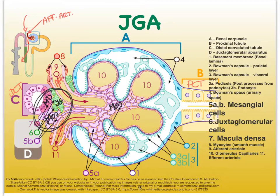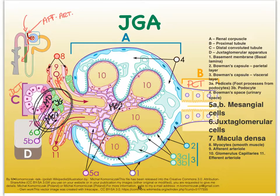Once you learn the details about how blood pressure in the body is regulated with the help of our kidneys, you'll see how important the juxtaglomerular apparatus is in regulating systemic blood pressure. This is finally the end of the anatomy of the nephrons in the kidneys, and we're ready to get going on the physiology of the kidneys.